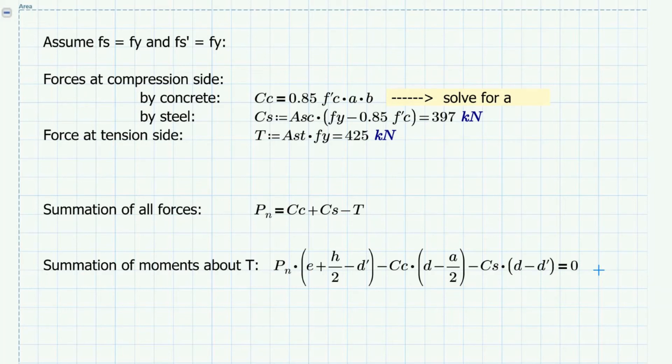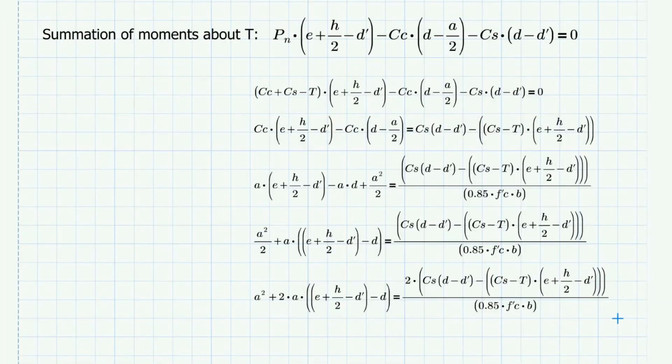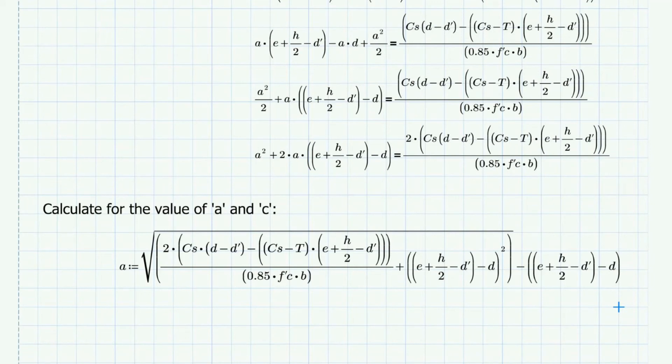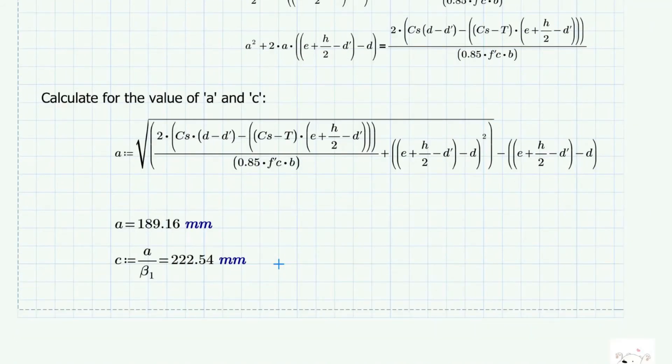By substituting the Pn equation to the moment equation, we derive a quadratic equation where A is the unknown. Simplifying the quadratic equation, we get the formula equation for A. And then solve for A and the value of C, which gives us a value of 223 mm.